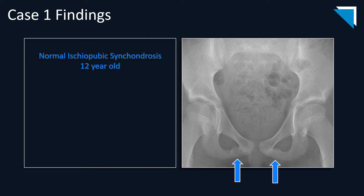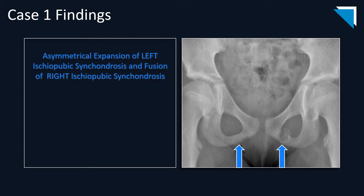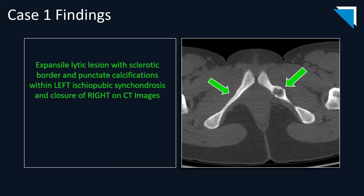Let's get to case number one. This is a patient who came in with buttock and hip pain. On the baseline study there is normal bilateral ischiopubic synchondrosis in this 12-year-old. Six months later there is asymmetrical fusion of the right ischiopubic synchondrosis with an expansiolytic-appearing lesion in the left. CT imaging revealed an expansiolytic lesion with a sclerotic border and punctate calcifications, with asymmetrical closure of the right ischiopubic synchondrosis.